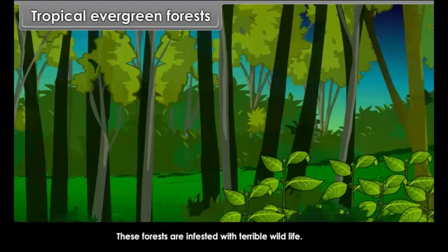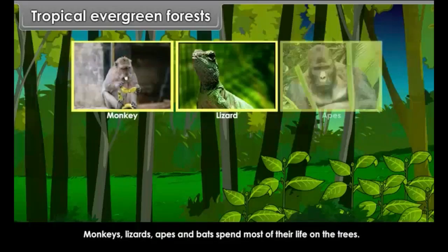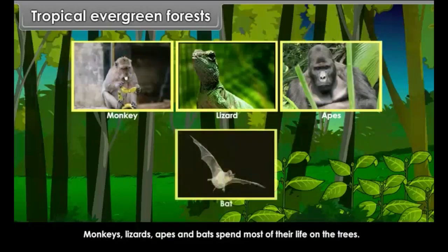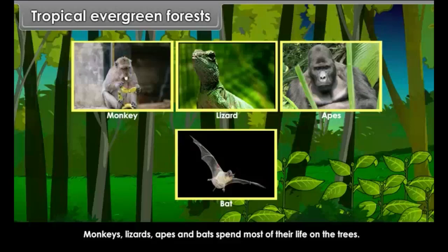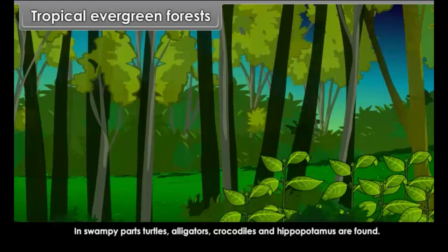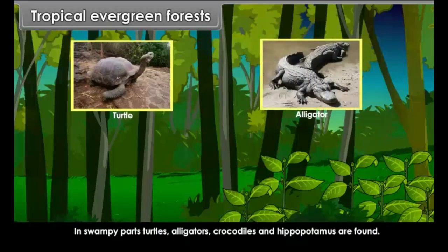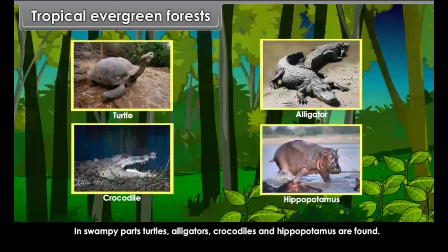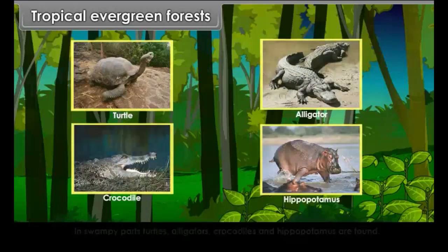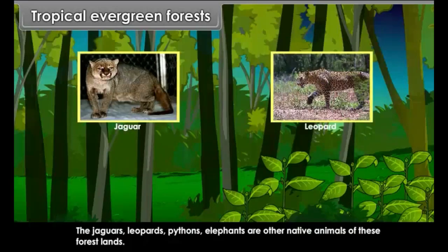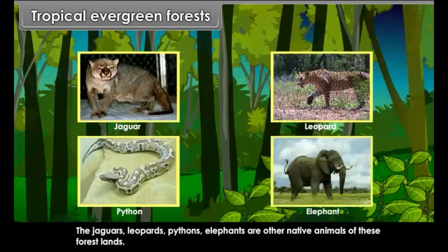These forests are infested with varied wildlife. Monkeys, lizards, apes and bats spend most of their life on the trees. In swampy parts, turtles, alligators, crocodiles and hippopotamus are found. Jaguars, leopards, pythons and elephants are the other native animals of these forest lands.